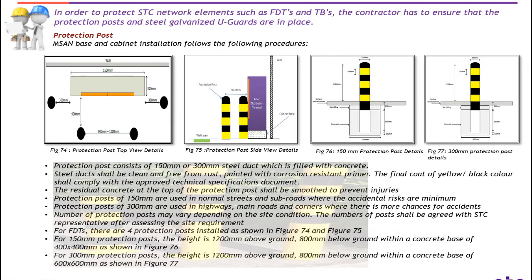In order to protect STC network elements such as FDTs, the contractor has to ensure that protection posts and steel galvanized U-guards are in place. Protection posts, amps and base and cabinet installation follow the following procedure. Protection posts consist of 150 mm or 300 mm steel duct filled with concrete. Number two: steel duct shall be clean and free from rust, painted with corrosion-resistant primer; the final coat of yellow-black color shall comply with the approved technical specification documents. Number three: the residual concrete at the top of the protection post shall be smoothed to prevent injuries.